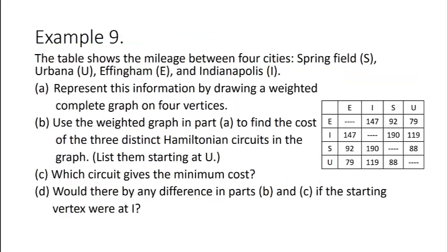Here's an example for you to try. The table shows the mileage between four cities: Springfield, Urbana, Effingham, and Indianapolis. Represent this information by drawing a weighted complete graph on four vertices. Use that weighted graph to find the cost of the three distinct Hamiltonian circuits in the graph, and you can list them starting at U. Which circuit gives the minimum cost?